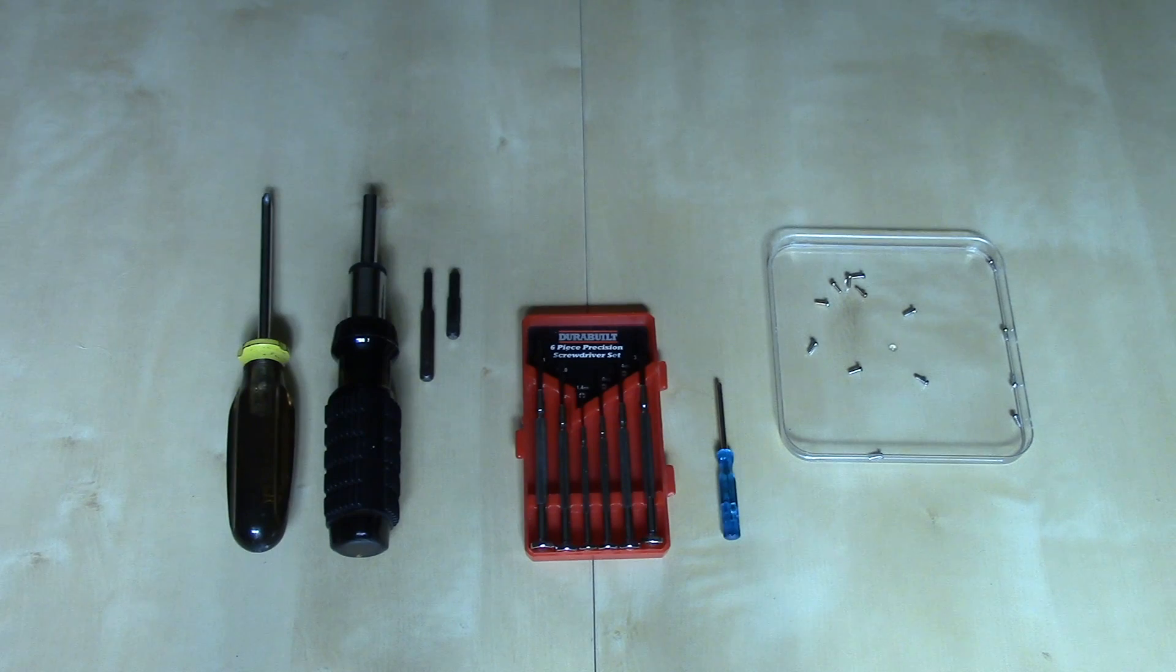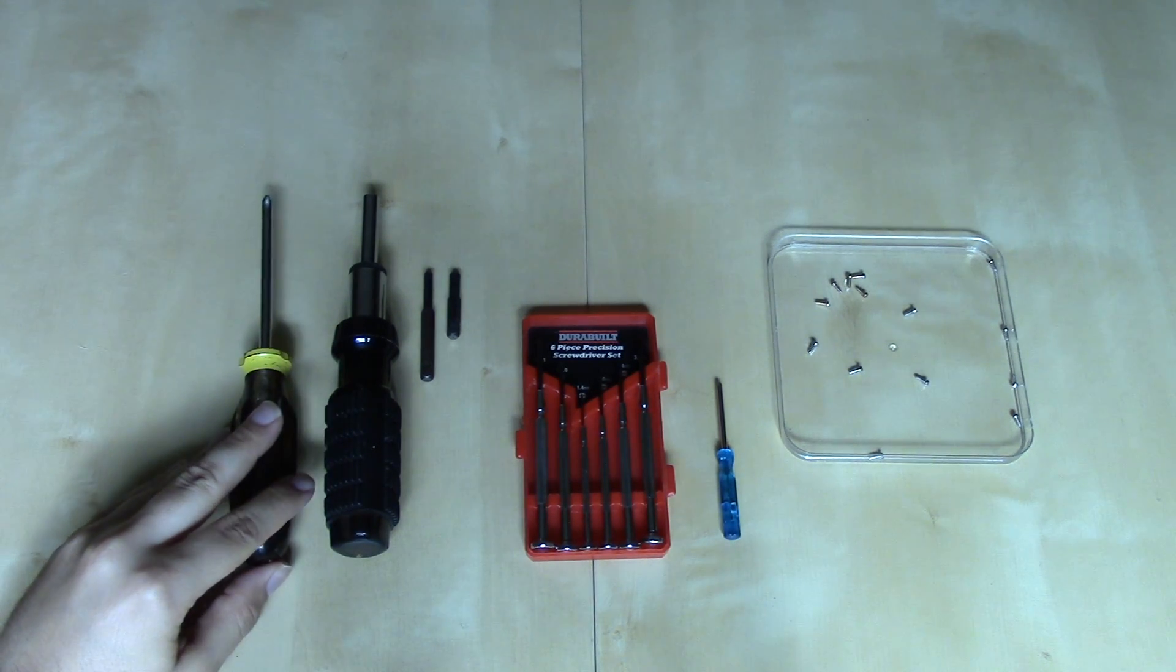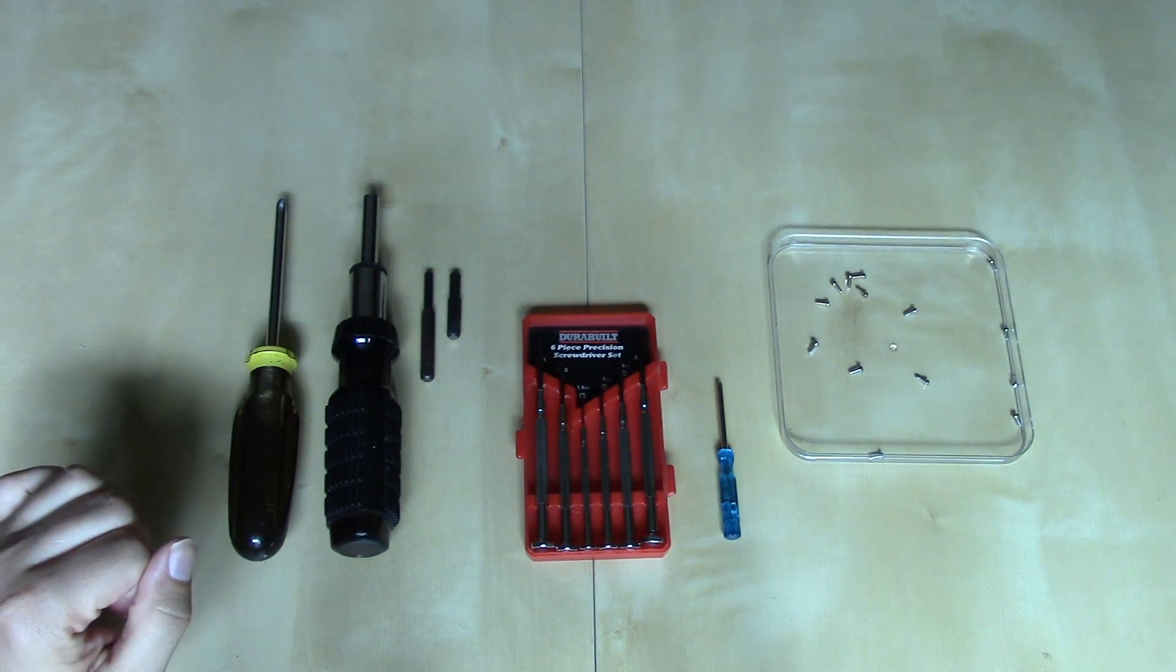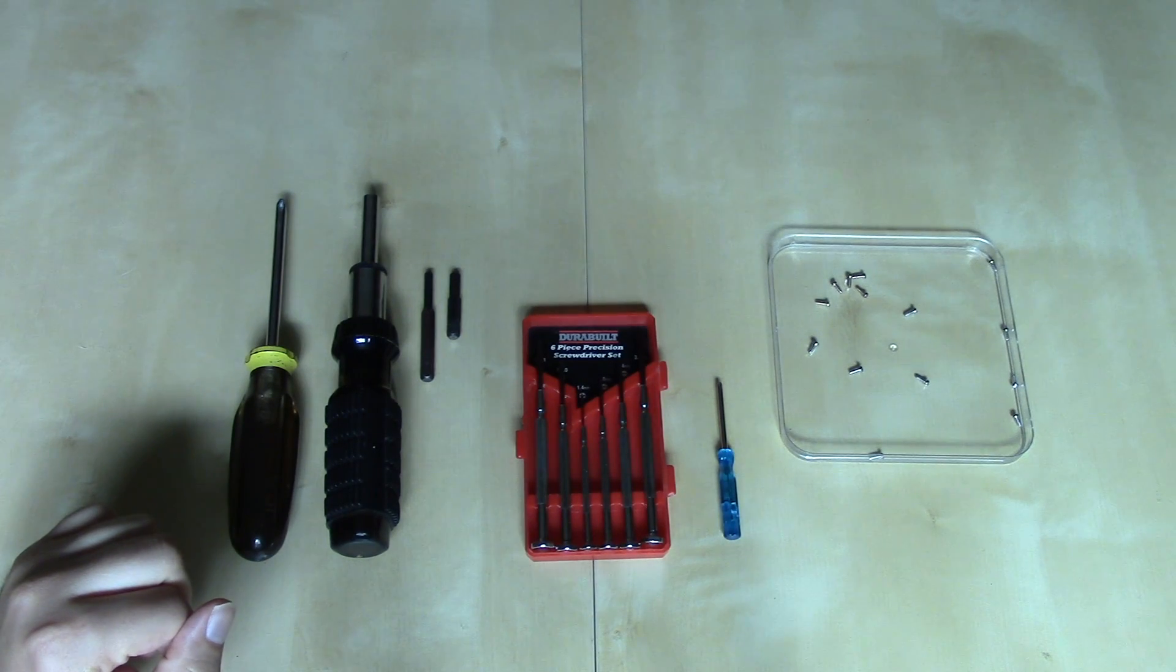So basically, for taking apart a Nintendo console, you're going to need a few pieces of hardware. I would recommend, at least for early Nintendo consoles, a medium-sized standard Phillips screwdriver.